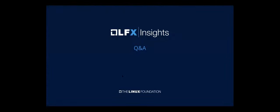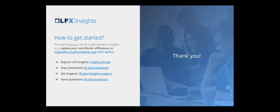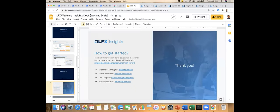Opening up for questions, but first some resource highlights. If you want to update your affiliations, you can go to the My Profile screen. These are the links to the app, how to get connected, stay connected with the newsletter. If you want support, add data sources, or your project is missing something — that's the place to go.